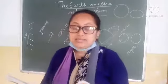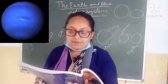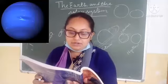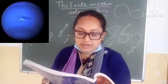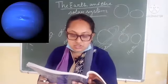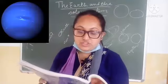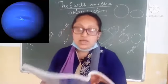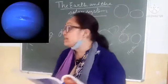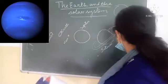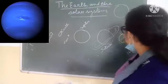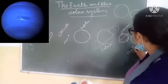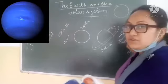Last is Neptune. Neptune is named after the Roman god of the sea. It is similar to Uranus in size and structure, and the two are called the twin giants. Neptune has eight known moons.